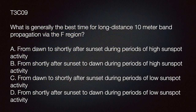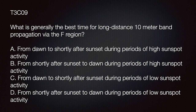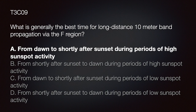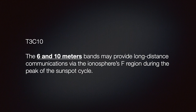The exam question: what is generally the best time for long-distance 10-meter band propagation via the F region? A) from dawn until shortly after sunset during periods of high sunspot activity; B) from shortly after sunset to dawn during periods of high sunspot activity; C) from dawn to shortly after sunset. The correct answer is A — from dawn to shortly after sunset during periods of high sunspot activity.